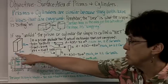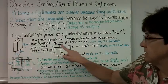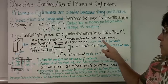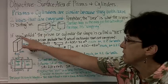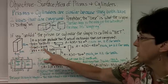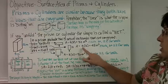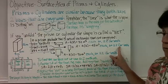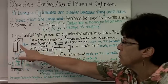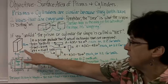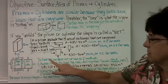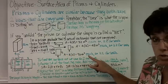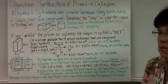You have the top and bottom, which would be 4 by 8, so the area would be 32 meters squared each — times 2 to get both. You have the front and the back, which is 4 by 12, so the area would be 48 meters squared each — times 2 for both. And then you have the left side and the right side, which would be 8 by 12, giving 96 meters squared for each — times 2 to get both.